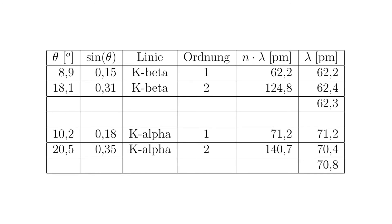For the lithium fluoride crystal with a lattice plane distance of d equal to 201 picometers, the following results are obtained. At theta equal to 8.9 degrees, sinus theta is 0.15; the k-beta line in the first order gives n times lambda equal to 62.2 picometers, which is also the wavelength itself. For theta equal to 18.1 degrees, sinus theta is 0.31 and the k-beta line in the second order gives n times lambda equal to 124.8 picometers, resulting in lambda equal to 62.4 picometers. The average is 62.3 picometers.